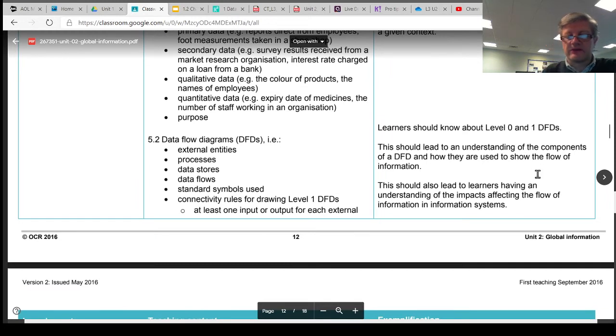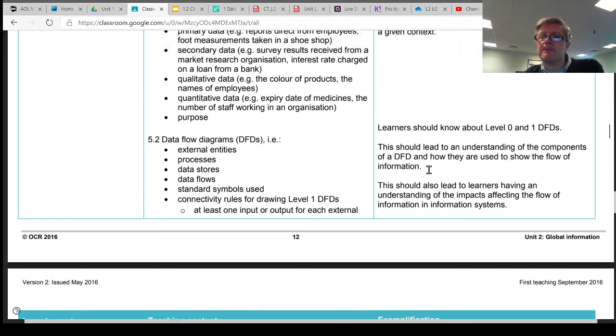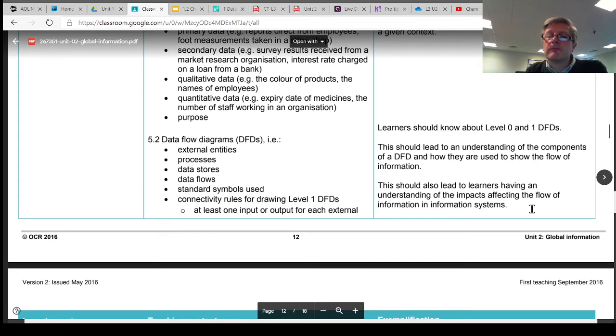Level 1 diagrams have some rules that need to be followed when we construct the diagrams. It also tells us here that we need some understanding of the different components of a data flow diagram and how they're used, and also some understanding of how flow of information can be affected in an information system and what impact that might have on the organization.